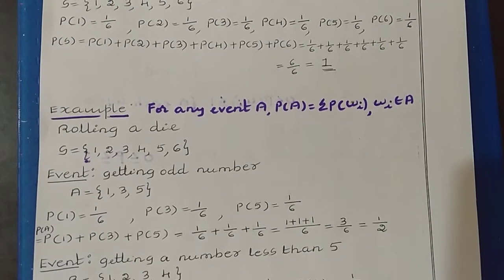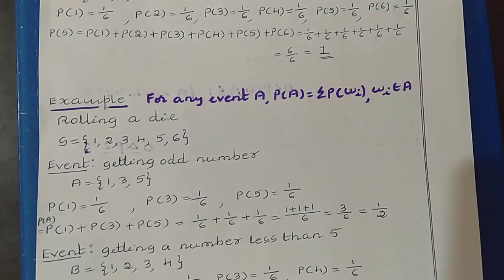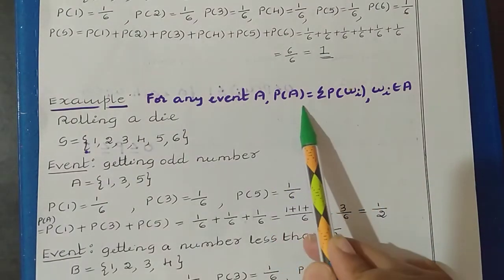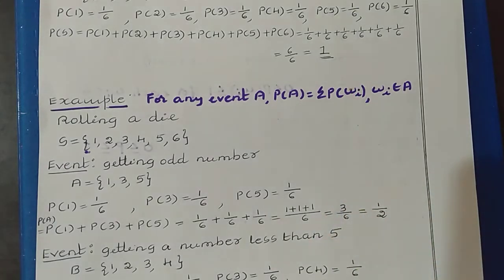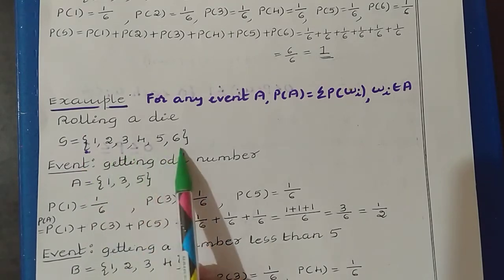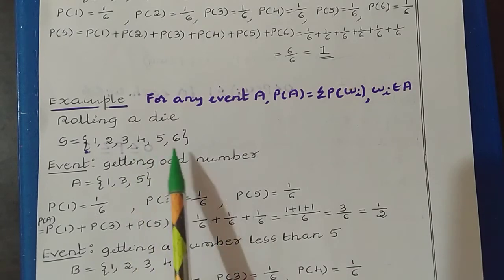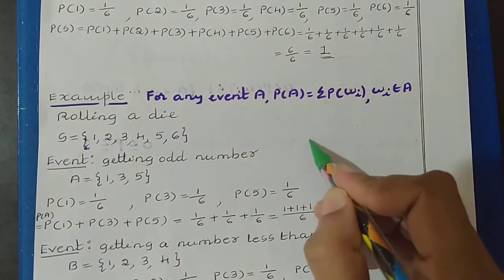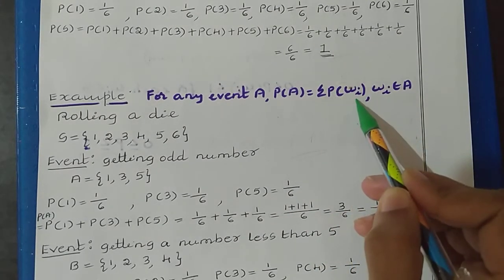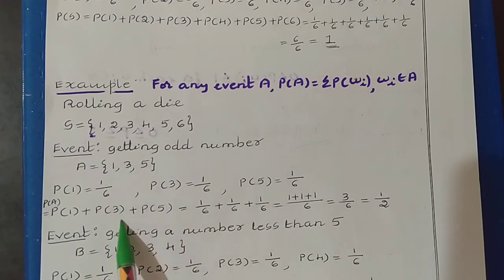Next, let us consider one more example to understand the third rule. The third rule is related to the event: we can find the probability of the event by adding the probability value of the outcomes of that event. That is, P(A) = Σ P(ωi). We have taken the same experiment of rolling a die, with 6 outcomes. Let us consider one event: getting an odd number. Here we have 3 possibilities: 1, 3, 5. So A = {1, 3, 5}. The probability of event A is the sum of the probability of each outcome of that event, so P(A) = P(1) + P(3) + P(5).